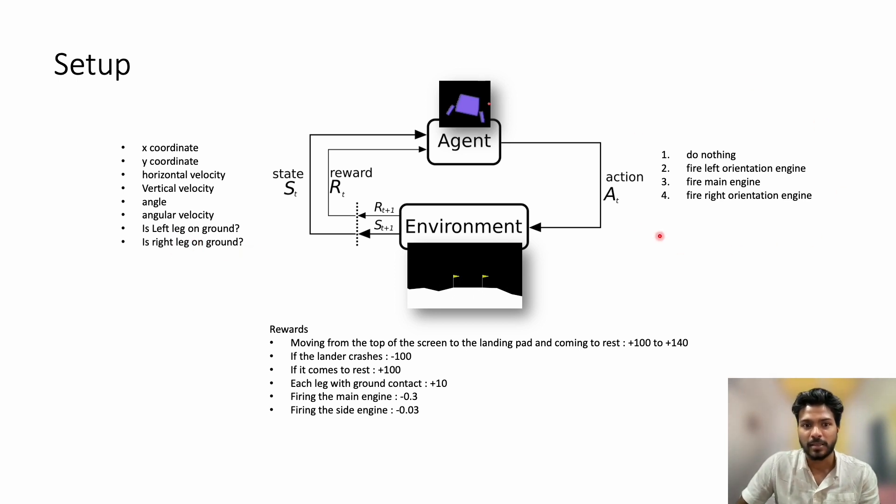There are four discrete actions that the agent can take: doing nothing, firing the left engine, firing the main engine, or firing the right orientation engine.